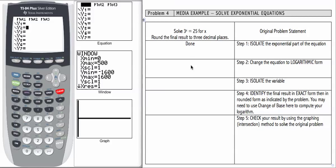For step 2, we're going to change the equation to logarithmic form. We're going to use that translation process going back and forth from exponential form to logarithmic form to complete this step. If we do that, we get log base 3 of 25 equals x. Notice how the x came out of the exponent and came down to the main part of the equation.